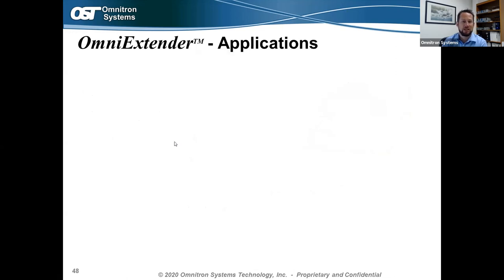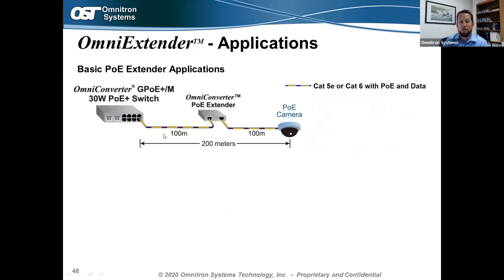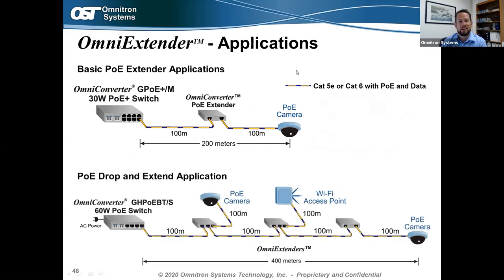Common PoE extender applications: whenever you need to connect a device beyond 100 meters, you can use Omni Converter PoE extenders. Coming out of a 30W switch, it powers the PoE extender with PoE — no local outlet needed — and from there sends PoE up to another 100 meters to a PoE camera over Cat5/Cat6 cabling. The drop-and-extend application is also great: running PoE up to 400 meters from the initial PoE power source by using multiple-port extenders to drop off PoE to a camera or Wi-Fi access point and extend another 100 meters to the next extender.